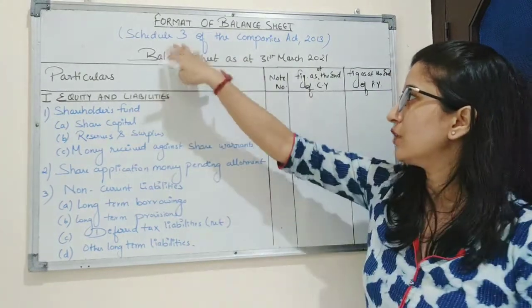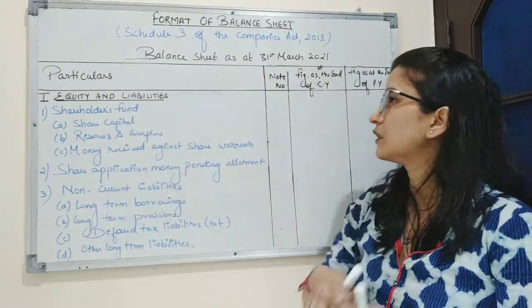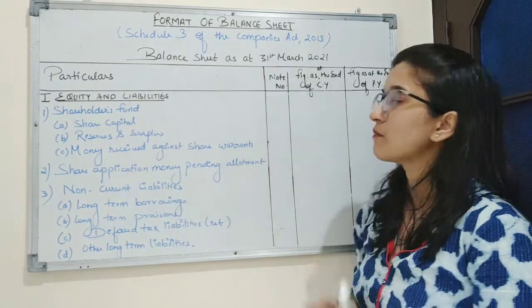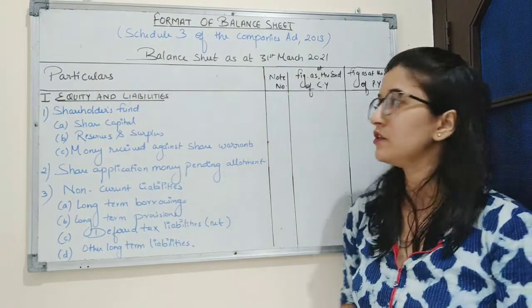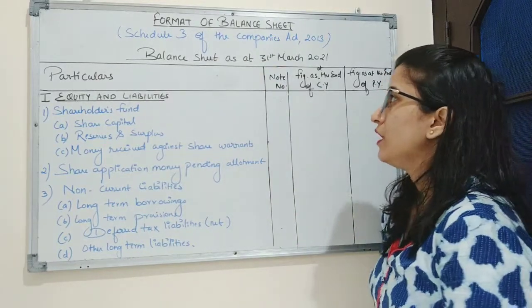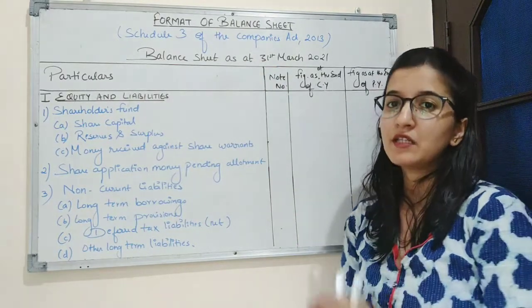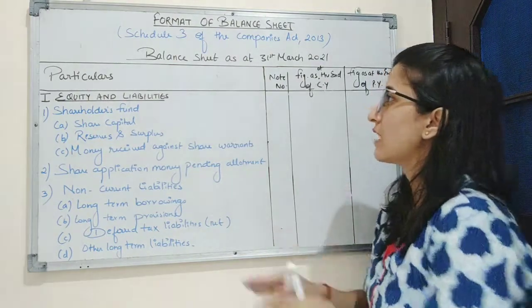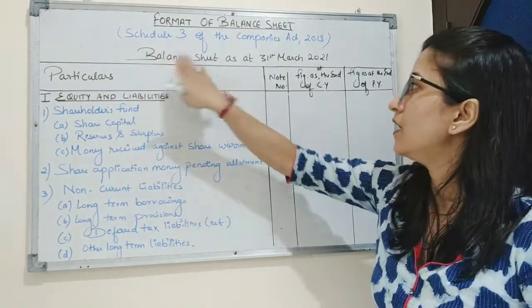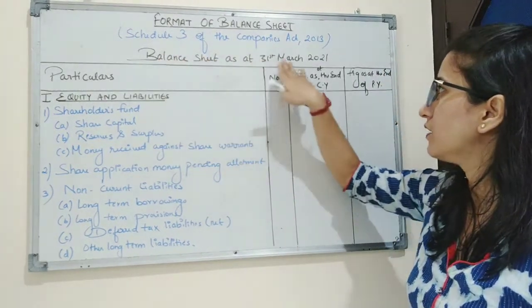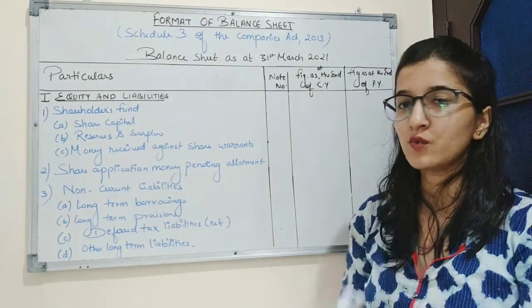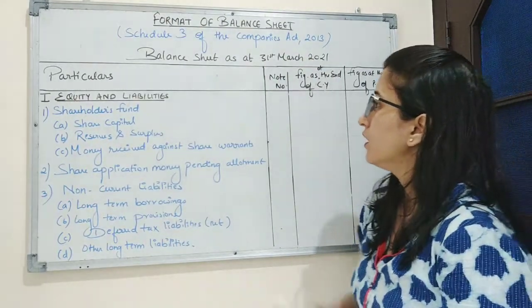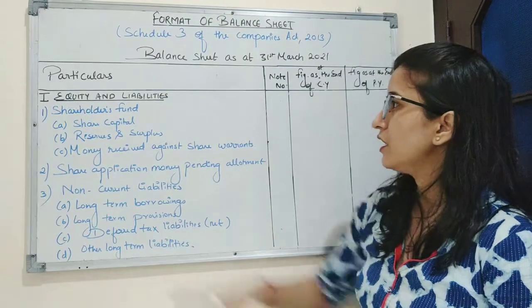When you go through Schedule 3 of Companies Act 2013, you will get the complete details of the format of the balance sheet. When the company is preparing the balance sheet in the current year, it will be mentioned as 'Balance Sheet as at 31st March 2021.'